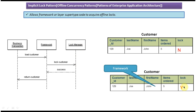The lock manager will put a lock on the particular row that the business transaction is requesting — in this case, row 129. Initially lock is null, so the framework calls the lock manager, which sets lock equal to Y. Once it puts the lock, the lock manager returns success to the framework.